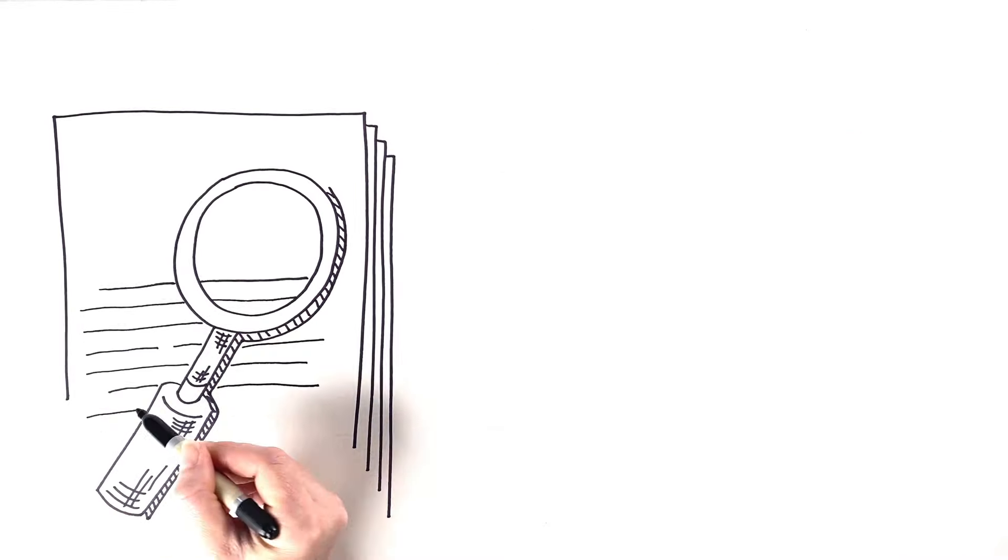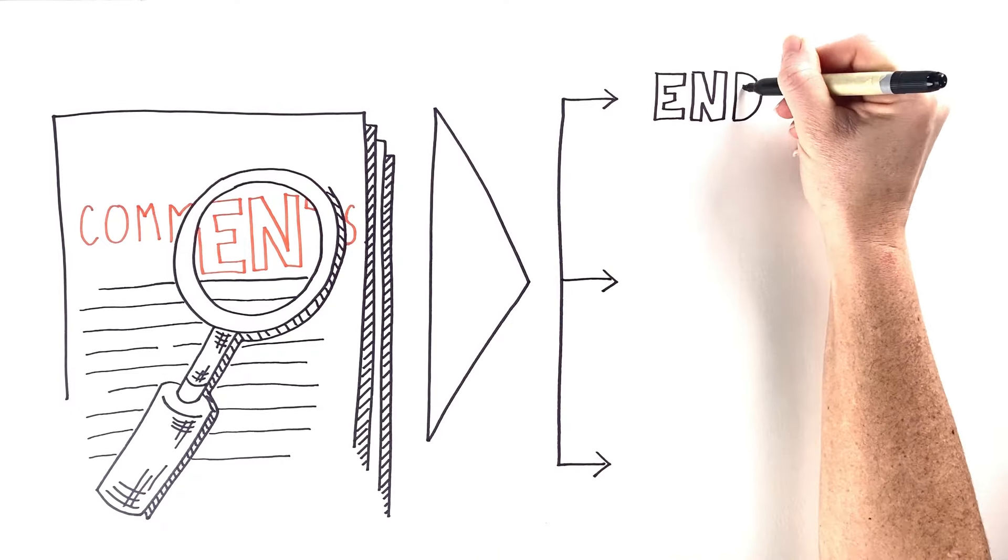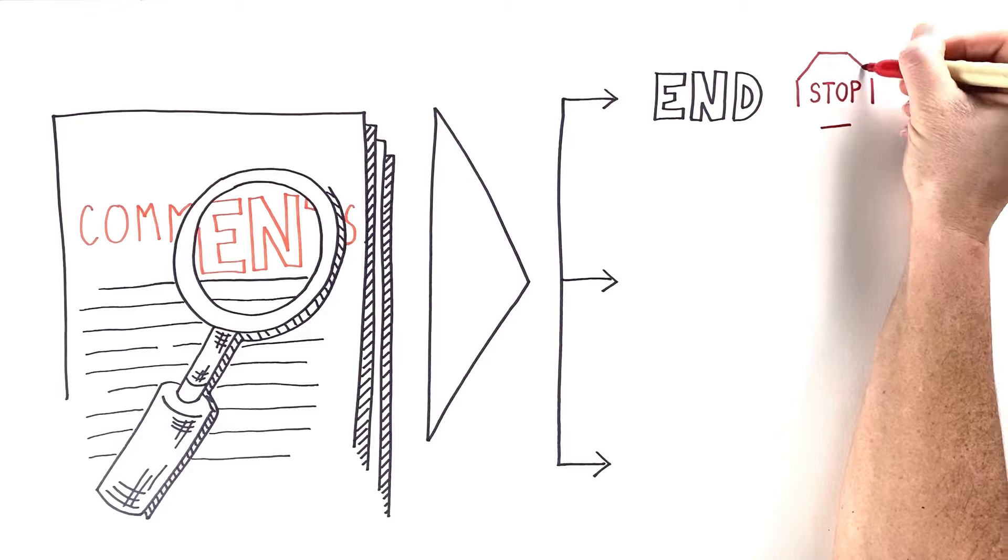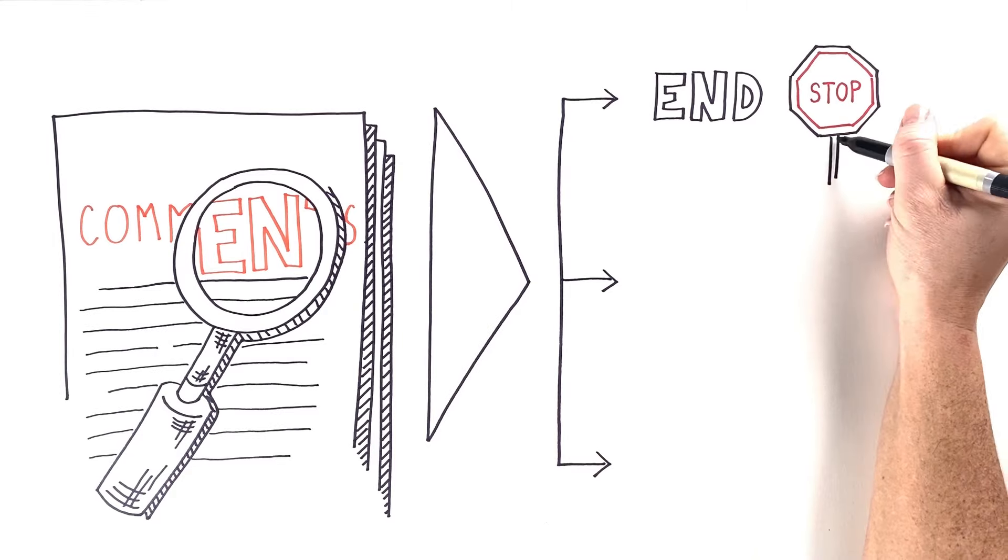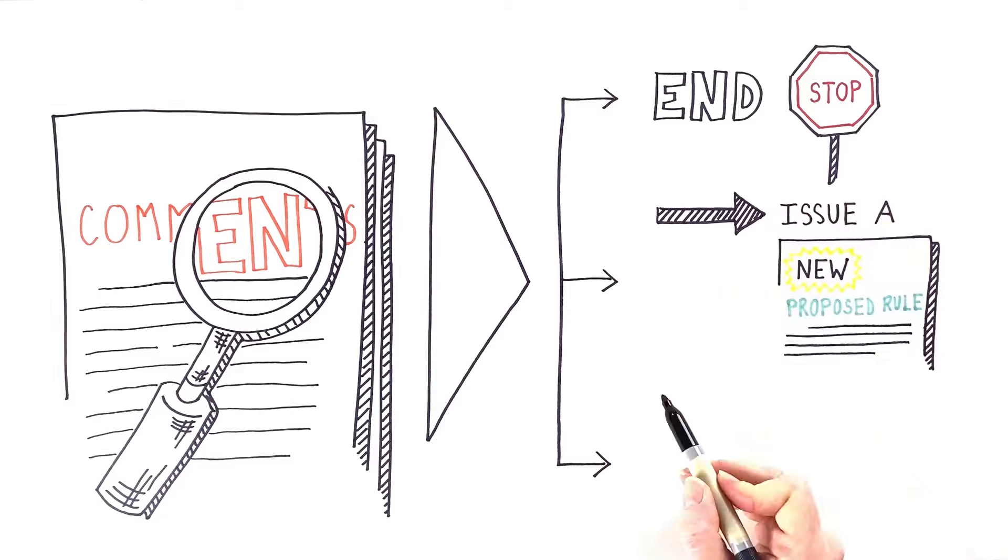CTP reviews all public comments submitted before the deadline and then decides what further action is needed. Based on the comments, CTP may decide to end the rulemaking process, to issue a new proposed rule, or to issue a final rule.